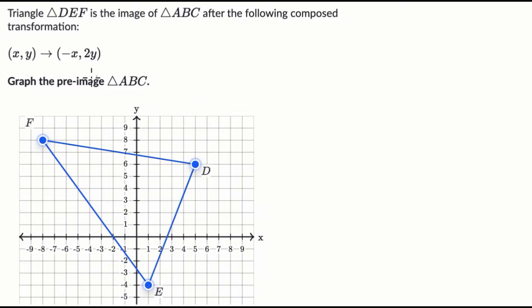Okay, so the key here is that they want the pre-image. Some of you might've just said, oh, I just have to perform this transformation, but that's not what they're saying. They're not saying apply this transformation to this triangle. They said we started with some triangle ABC, then we performed this transformation, and then we got triangle DEF. So what we really want to do is go in reverse.